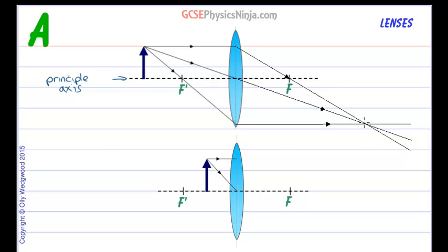And we can see that they converge at a single point and that point will form a real image. It will be the tip of the arrow.